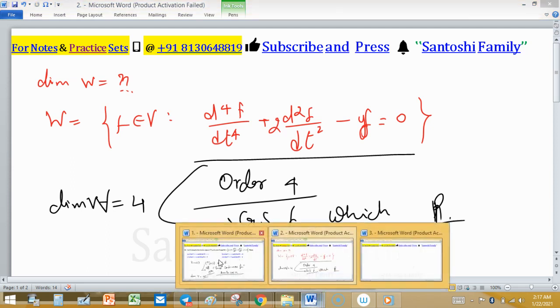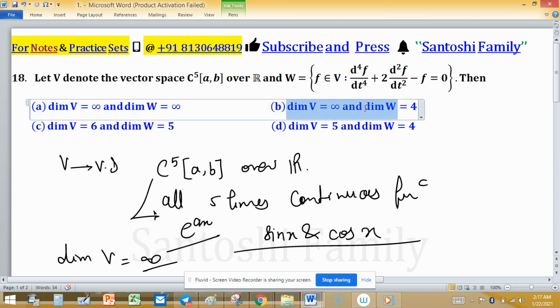Which option is right here? As dimension of V equals infinity and dimension of W equals 4, so option B is right here.